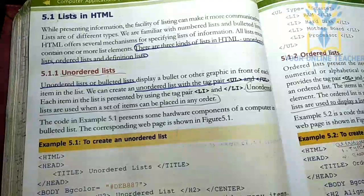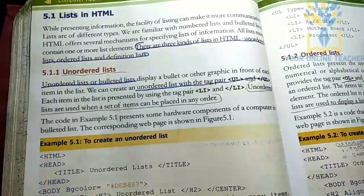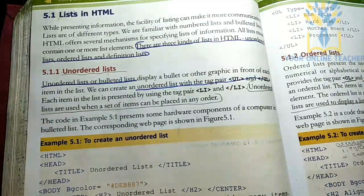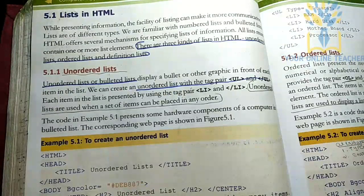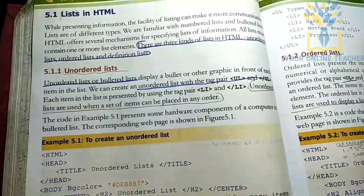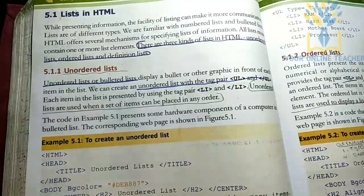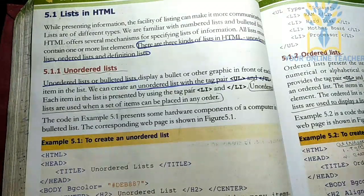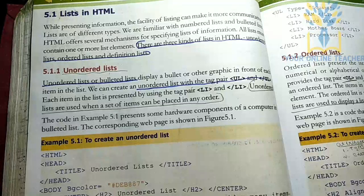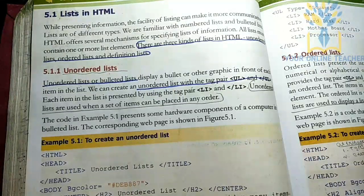First, we are going to learn about lists in HTML. The main items are the list types in HTML: Unordered List, Ordered List, and Definition List. We are going to learn about each of them.